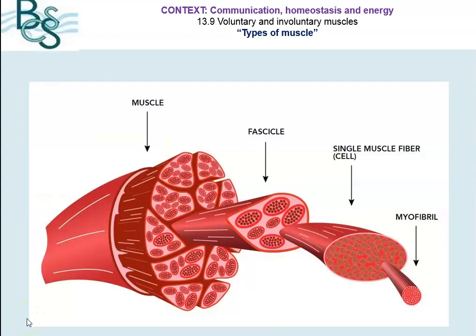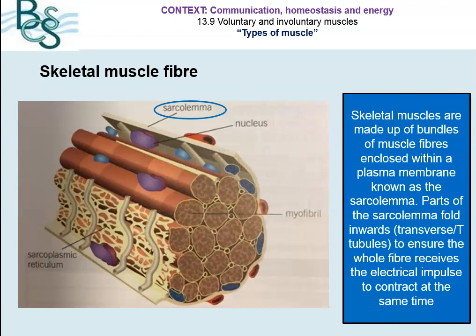Now we're going to have a look at skeletal muscle in a little bit more detail. This picture shows a whole muscle that's divided into sections — each one is called a fascicle, and then that is made up of single muscle fibres, which is one cell. And then we have that made up of sections called myofibrils. If we look at one of those cells — the muscle fibre — in a bit more detail, you can see that they're made up of bundles of proteins, which are referred to as myofibrils.